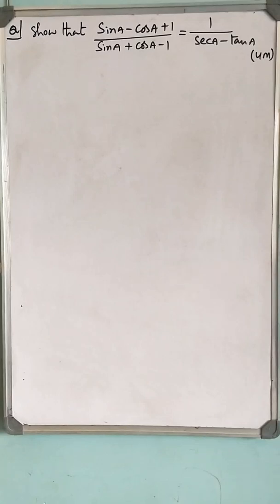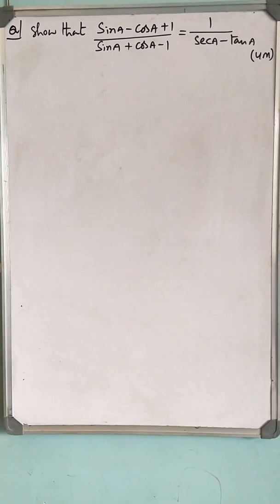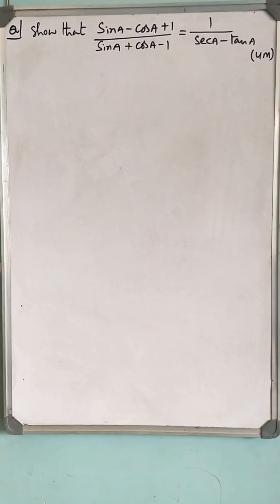Hi everyone, welcome to Anjima's channel. Today I would like to prove a statement from trigonometry: show that (sin a - cos a + 1) / (sin a + cos a - 1) is equal to 1 / (sec a - tan a). This is a foremost question from trigonometry. You have to use some basic trigonometric rules like inverse relations and identities. Let us see how the proof goes.